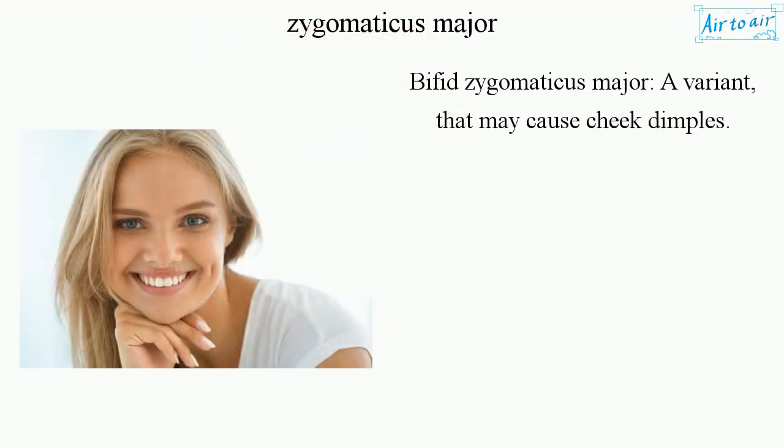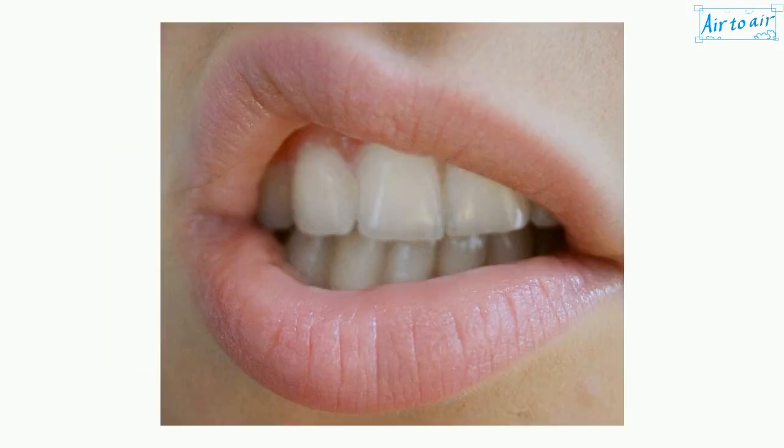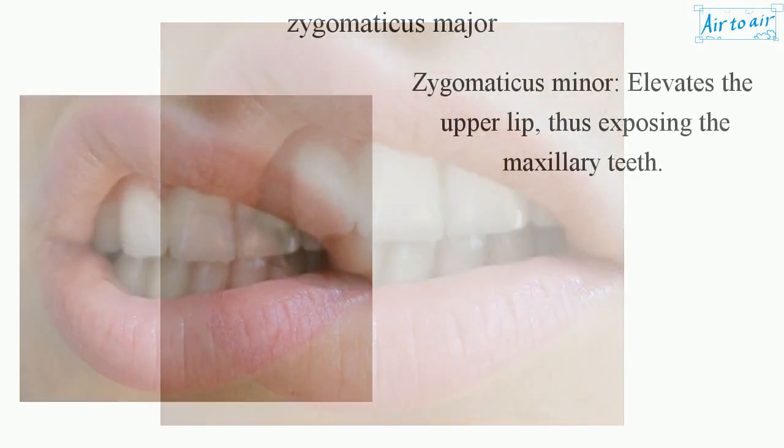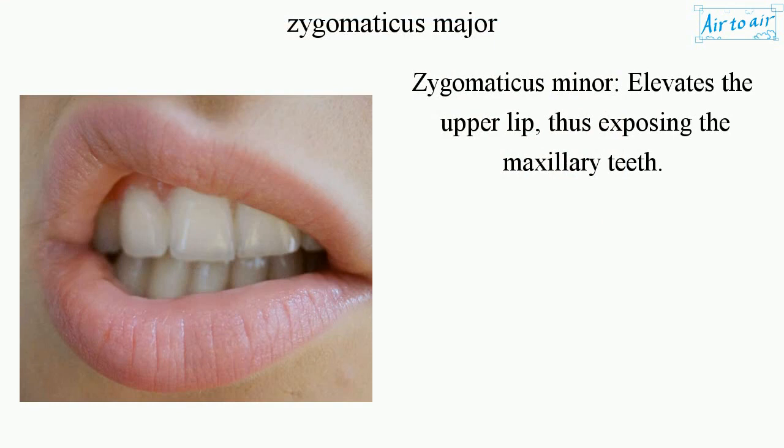Bifid zygomaticus major: a variant that may cause cheek dimples. Zygomaticus minor elevates the upper lip, thus exposing the maxillary teeth.